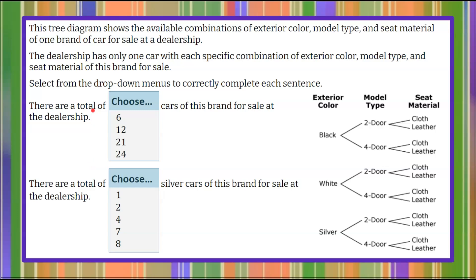So our first question or statement is we have a total of cars for this brand at sale. So we're going to go over to our tree diagram and see that we're going to start with the exterior color and there's three options. So when we go to black we can see we can do black two-door cloth or we could do black two-door leather. So there are two different black cars on the lot for sale.